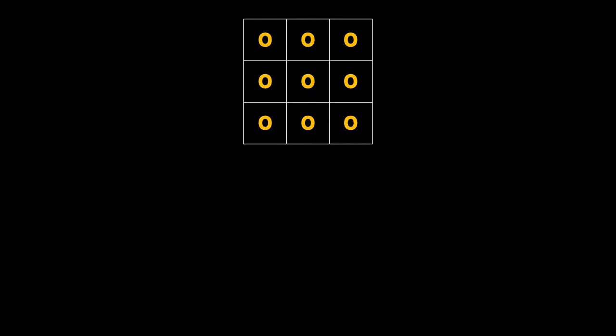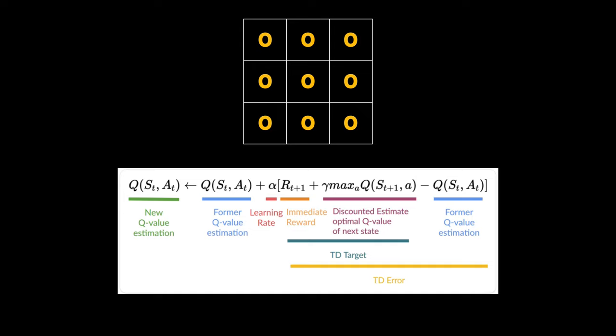During training we initialize the Q values with zeros throughout our combination of the state-action pair. How we update the Q values during training is as per the below equation.